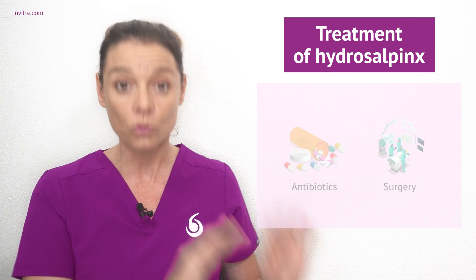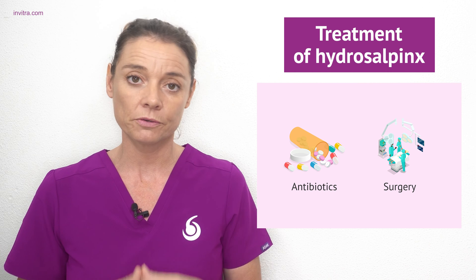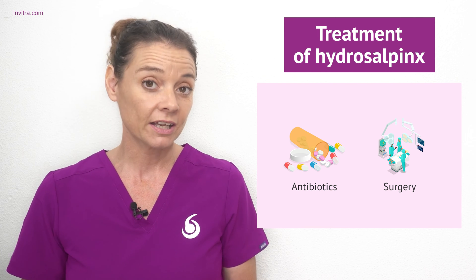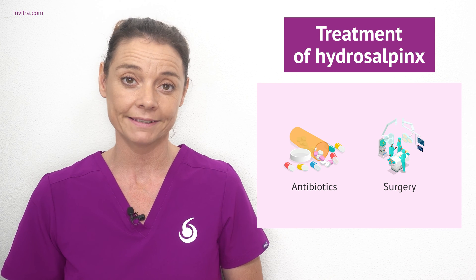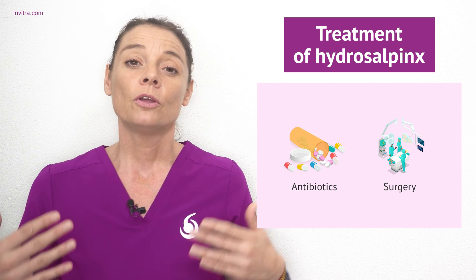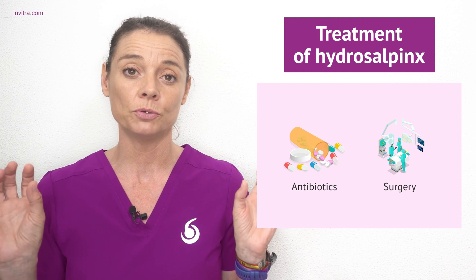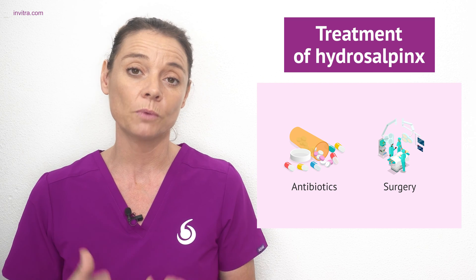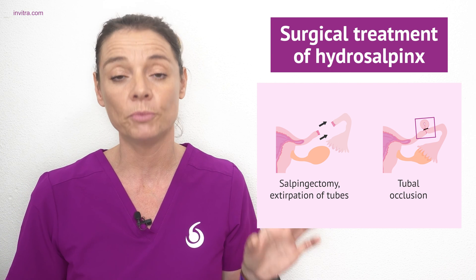The treatment of hydrosalpinx will depend on the cause. If there is still infection present, your doctor will prescribe antibiotics. Doxycycline is one of the most frequently prescribed antibiotics for hydrosalpinx. If after antibiotic treatment the hydrosalpinx is not resolved, the doctor may then resort to a surgical technique in order to remove the part of the fallopian tube which is swollen. One of these is a salpingectomy, whereby the affected section of the fallopian tube is surgically removed.